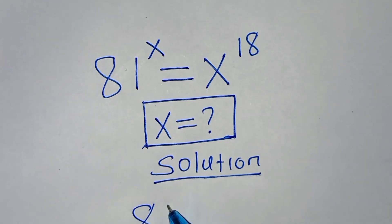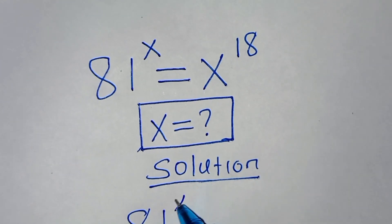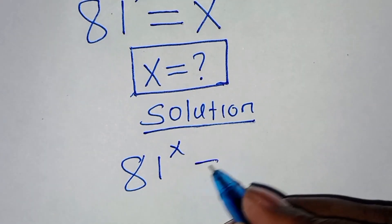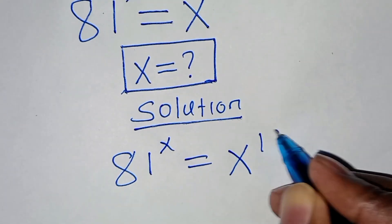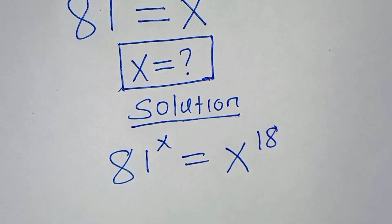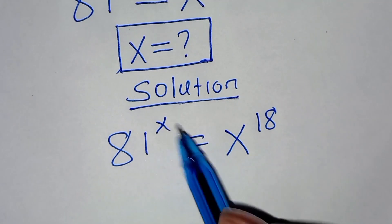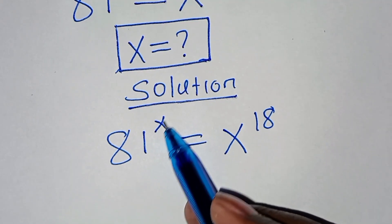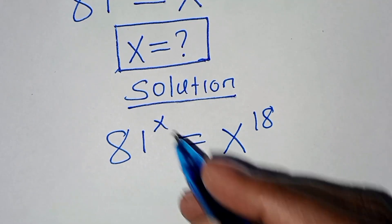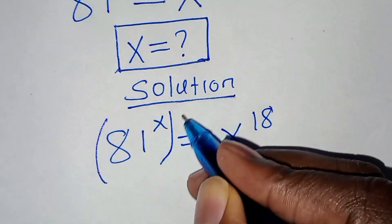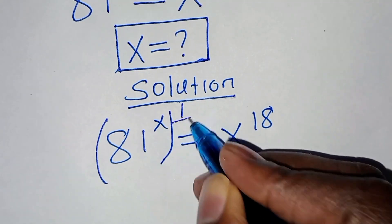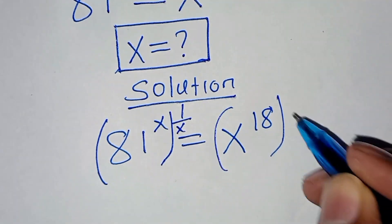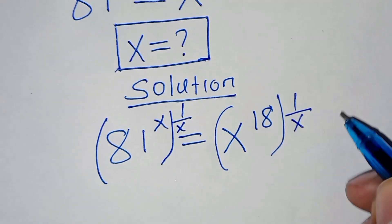We have 81 raised to the power x, this is equal to x to the power 18. The first thing here, let's eliminate the power of x by multiplying both sides by 1 over x. Let's also multiply here by 1 over x.